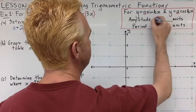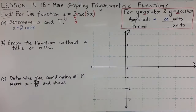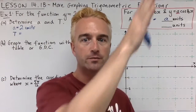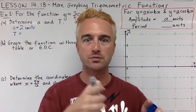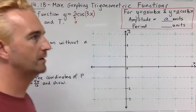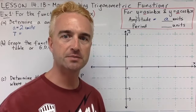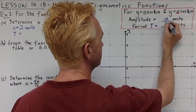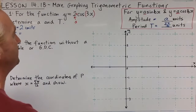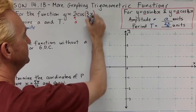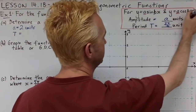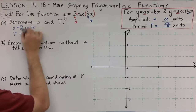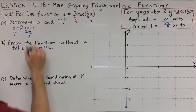The period t is how often one full cycle occurs — how much horizontal space does one full cycle take up. For the standard sine and cosine functions it was 2 pi, but the period t is 2 pi divided by the b value. B is the number attached to x, which in this case is 3. So our period is 2 pi divided by 3 units.